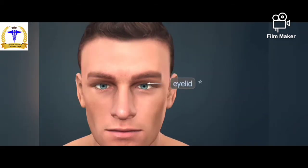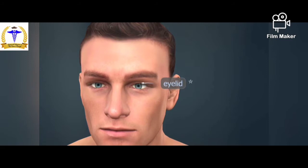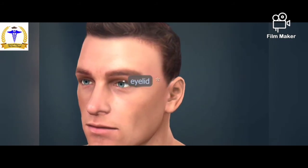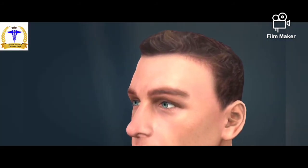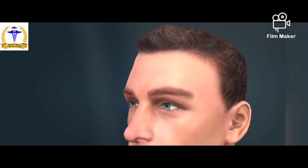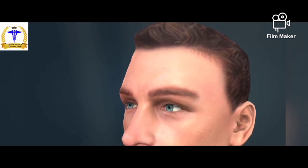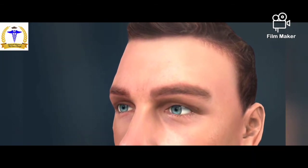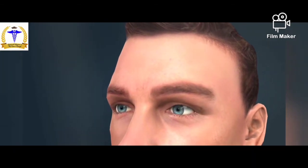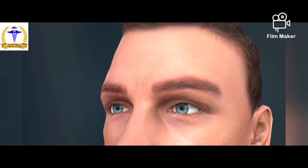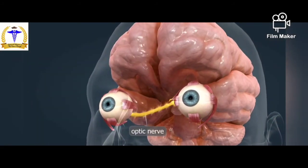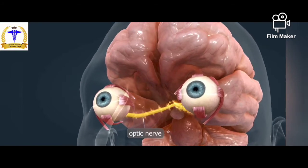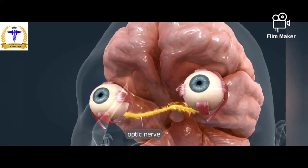Visible light is electromagnetic radiation that has a wavelength within a range of about 380 to 800 nanometers. Light of 380 nanometers in wavelength is seen as violet, while light of 800 nanometers in wavelength is seen as red. Light is perceived by the eyes.